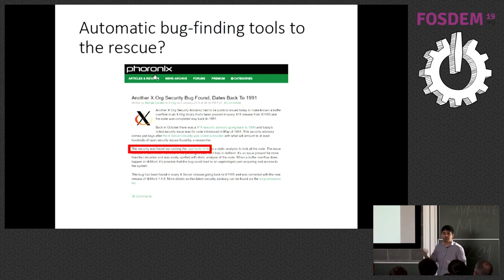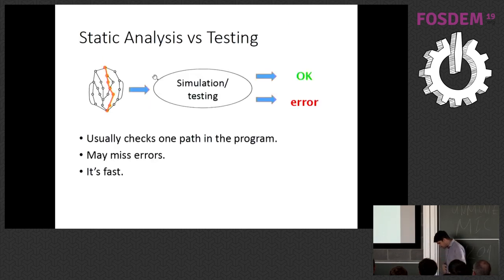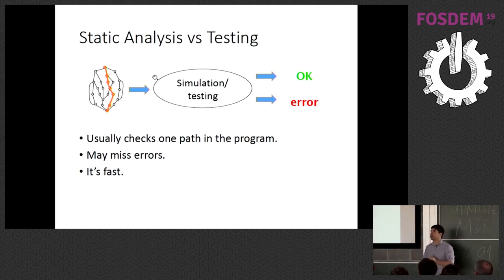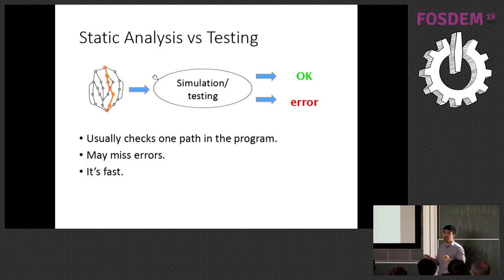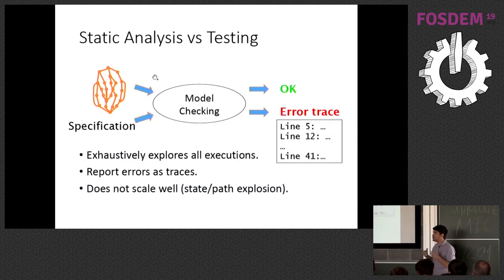We want these tools to find bugs and report them nicely so we can fix them. What's the difference between analysis and testing? Testing usually checks one path — we give some concrete inputs, run the tool, and it may miss errors, but it's fast. We can run many tests and get either 'no bug on this path' or 'there is an error.'